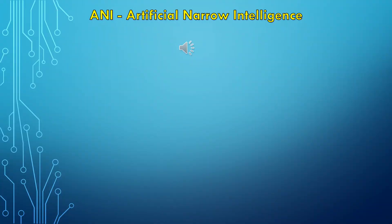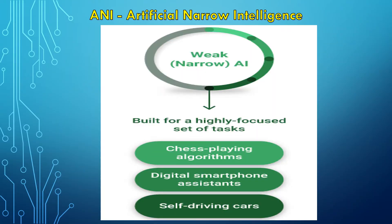ANI, artificial narrow intelligence, is an existing type of AI which is capable of performing simple tasks requiring basic intelligence. The intelligence of these systems is narrow in the sense that they are only capable of performing one task, but in many cases they can perform this one task better than human beings.